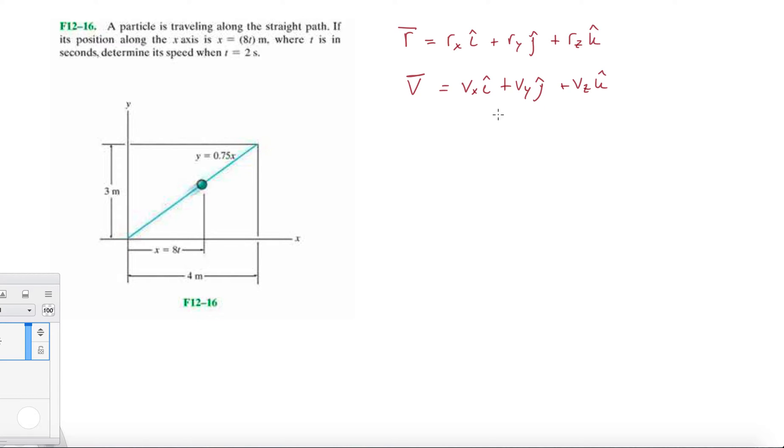Since we're only dealing with two dimensions here, let's get rid of this one. The reason I'm writing this is because we're going to need it. To get the magnitude of the velocity, we're just going to square each component: Vx squared plus Vy squared. That'll give us the magnitude. We'll be utilizing this in this problem.